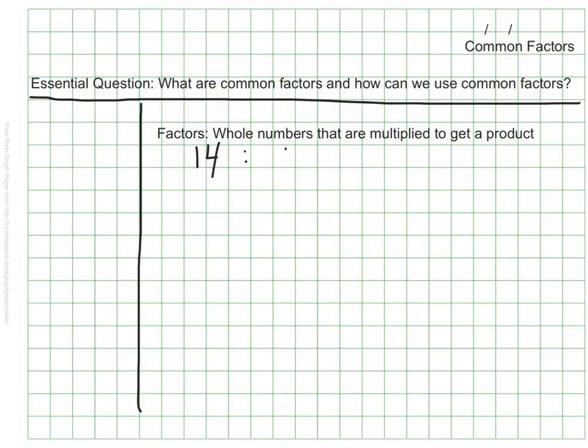1 and 14 would multiply to make 14, so they are factors of 14. And also 2 and 7 are factors as well, because 2 times 7 makes a product of 14. So these are kind of like the building blocks of numbers.